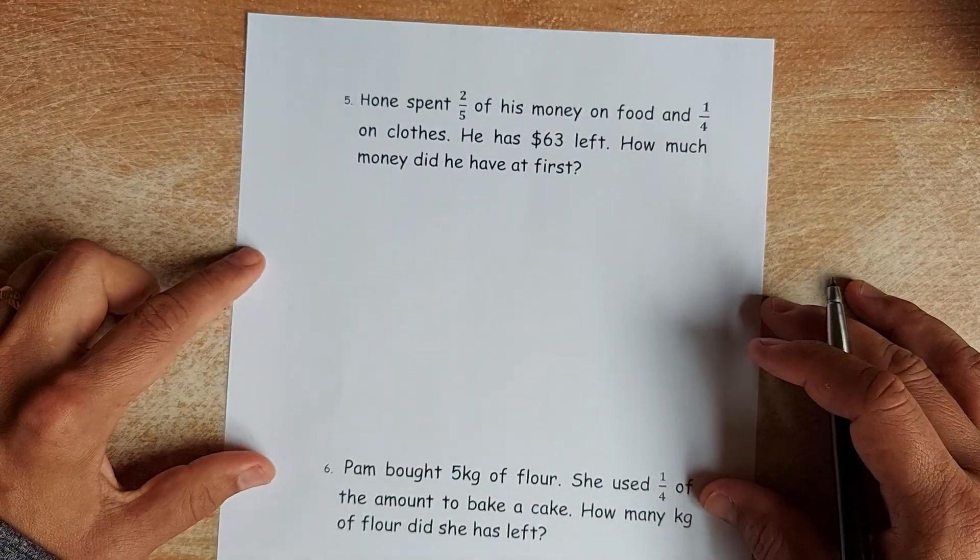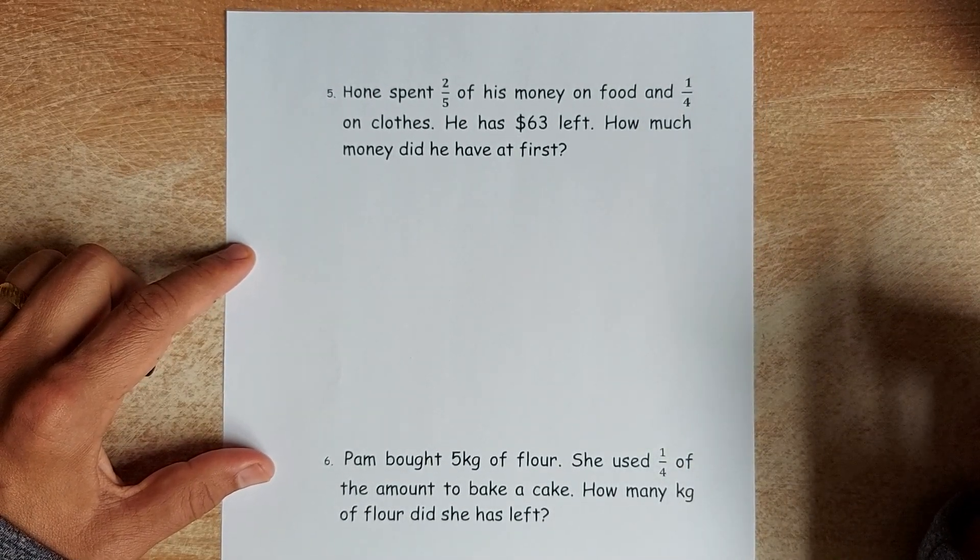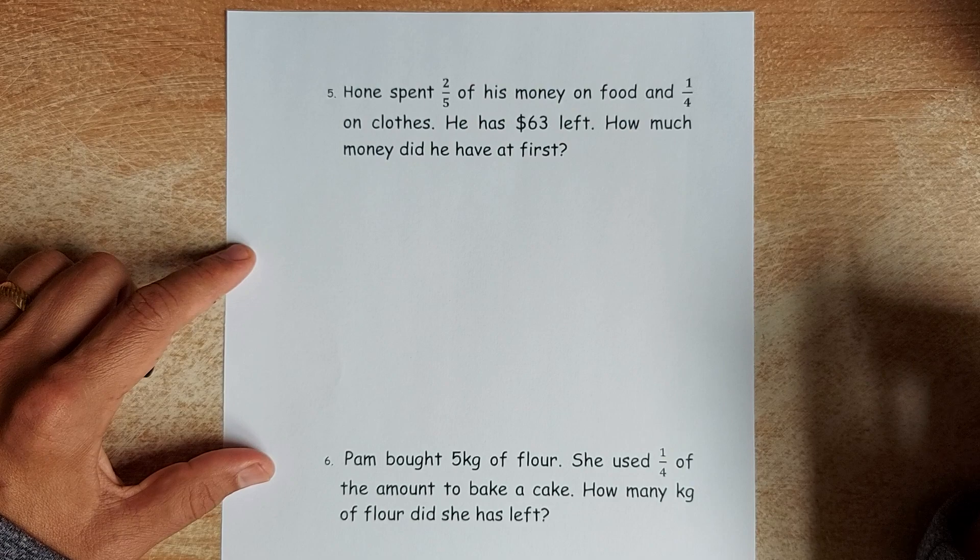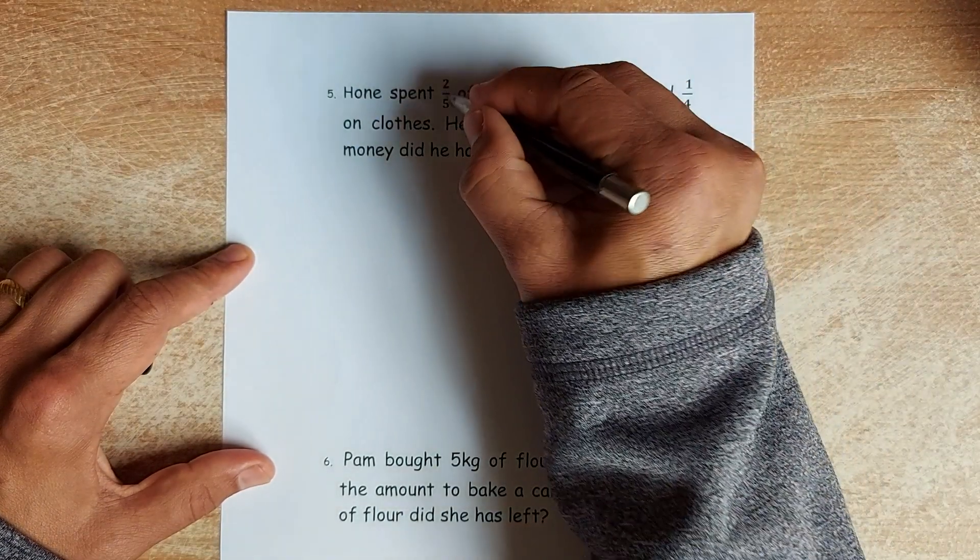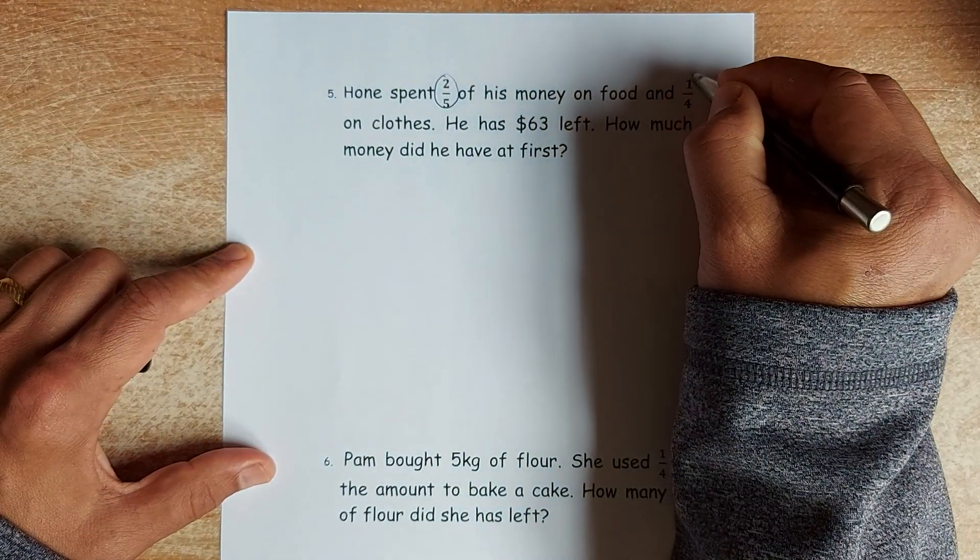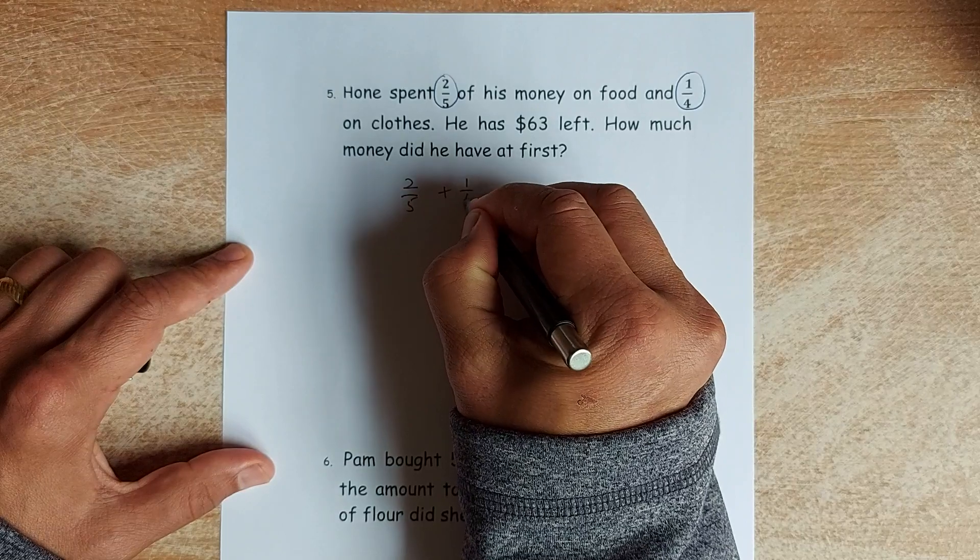We shall carry on now to the second page. The second page is slightly different. So read the question. Hone spent two-fifths of his money on food and one-quarter on clothes. He has $63 left. So what you need to do, you're going to add these two fractions first. Two-fifths plus one-quarter.